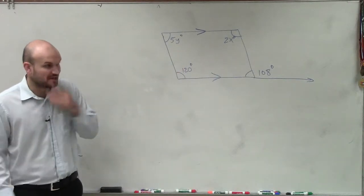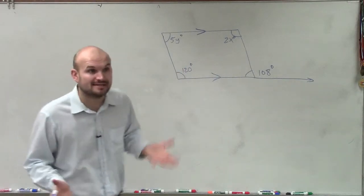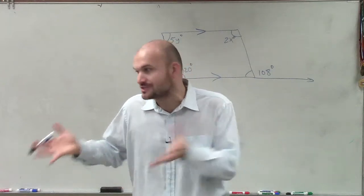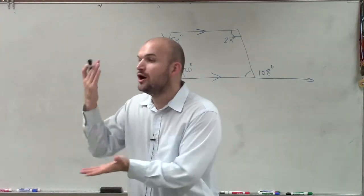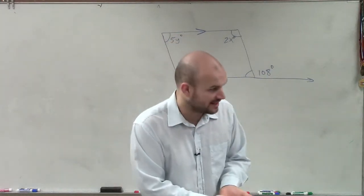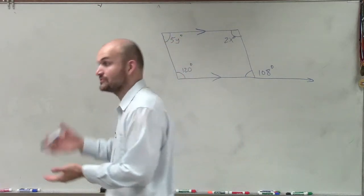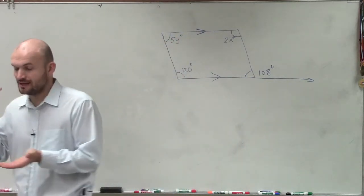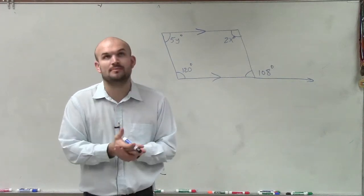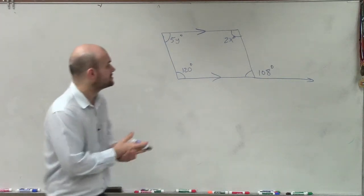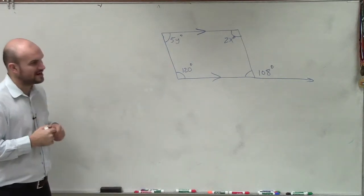So a couple things that we look at. We know we have parallel lines. When we have parallel lines, automatically, again, think of, just like last problem that I went over, alternate interior angles, alternate exterior angles, corresponding angles, as well as consecutive interior angles. So we need to evaluate for x and y.